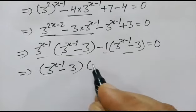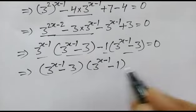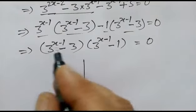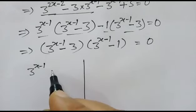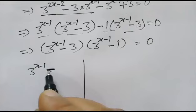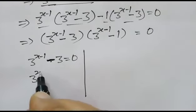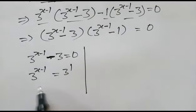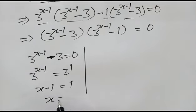We now have two cases. Case one: 3^(x-1) minus 3 equals 0, so 3^(x-1) equals 3, which means 3^(x-1) equals 3^1, so x minus 1 equals 1, giving x equals 2.